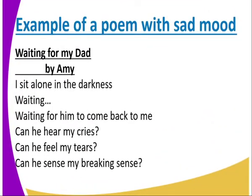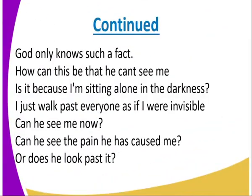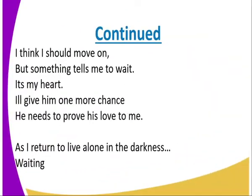Can we look at an example of a poem with a sad mood, written by the poet Ami? The topic is 'Waiting for My Dad.' I sit alone in the darkness waiting — waiting for him to come back to me. Can he hear my cries? Can he feel my tears? Can he sense my breaking? God only knows such a fact. How can this be, that he can't see me? Is it because I'm sitting alone in the darkness? I just walk past everyone as if I were invisible. Can he see me now? Can he see the pain he has caused me? Or does he look past it? I think I should move on, but something tells me to wait — it's my heart. I'll give him one more chance. He needs to prove his love to me. As I return to live alone in the darkness, waiting.